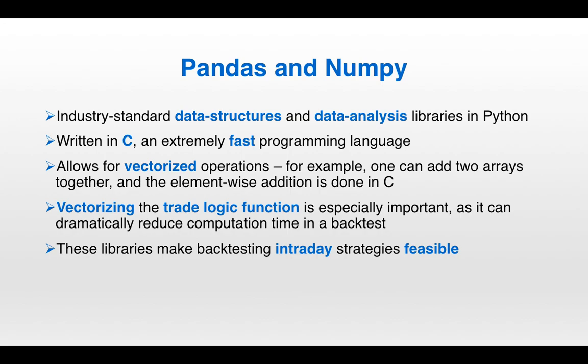The two most important Python libraries for quant trading are pandas and numpy. These are the industry standard data structures and data analysis libraries in Python, and they're both written in C. They allow for vectorized operations — this means if you're adding two arrays together in Python using pandas or numpy, the elementwise addition isn't done in Python, which is relatively slow. The elementwise addition is done in C, so it really speeds things up.